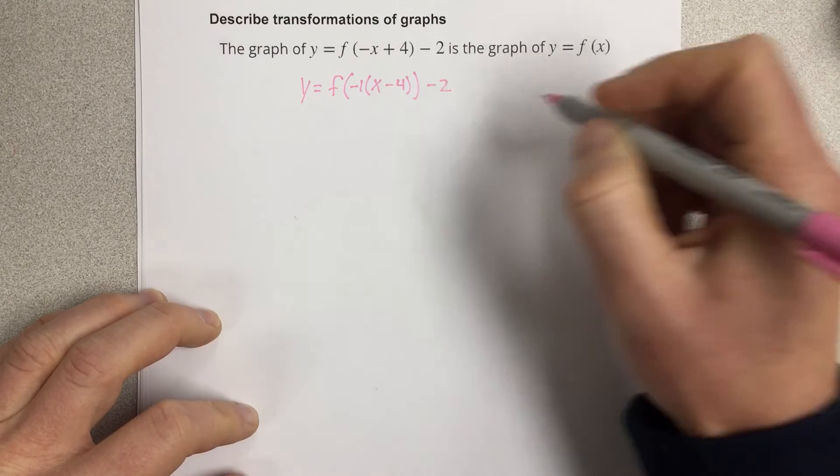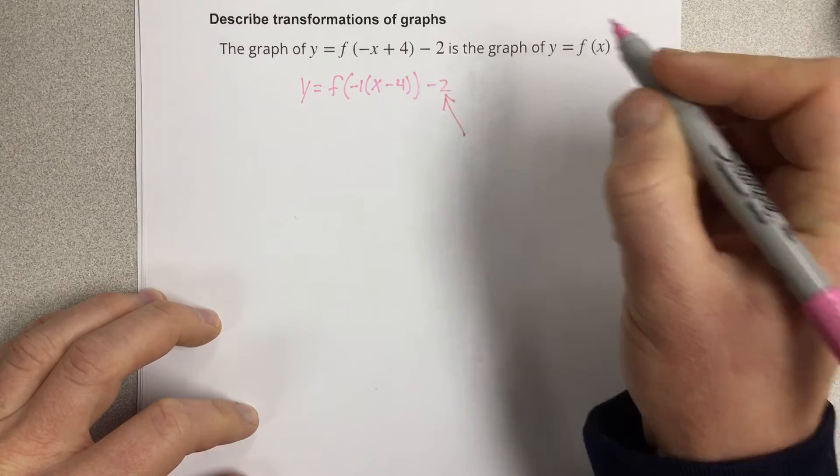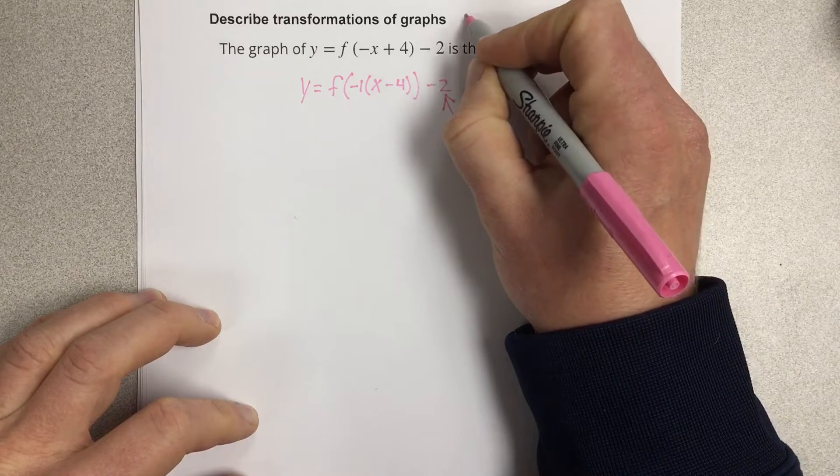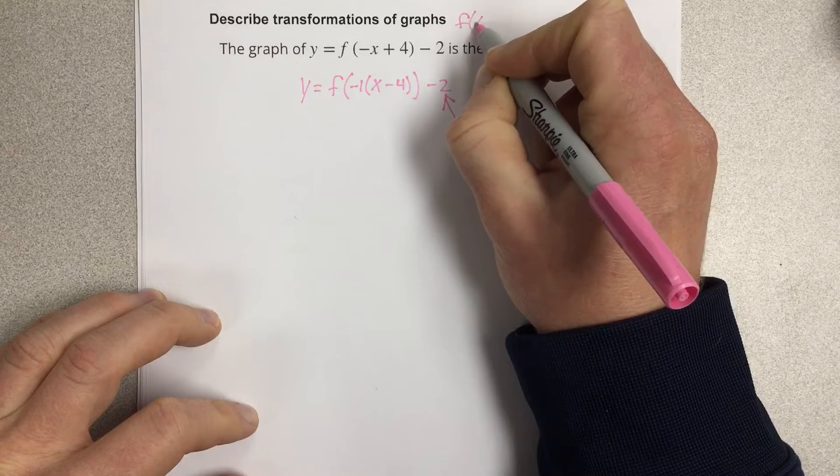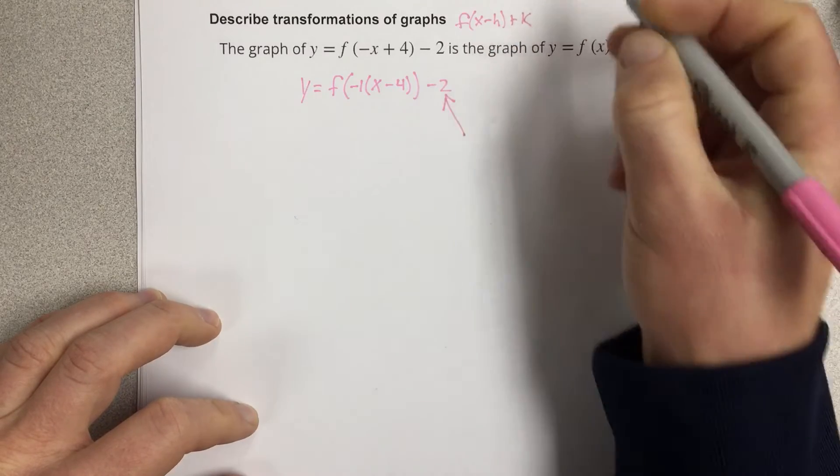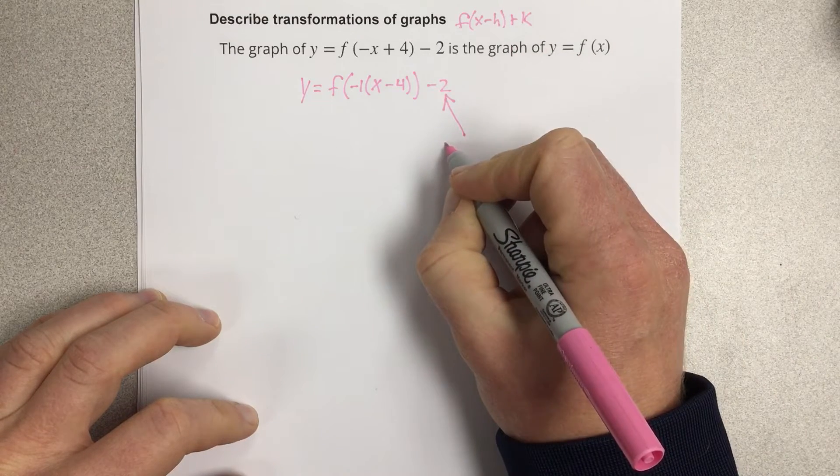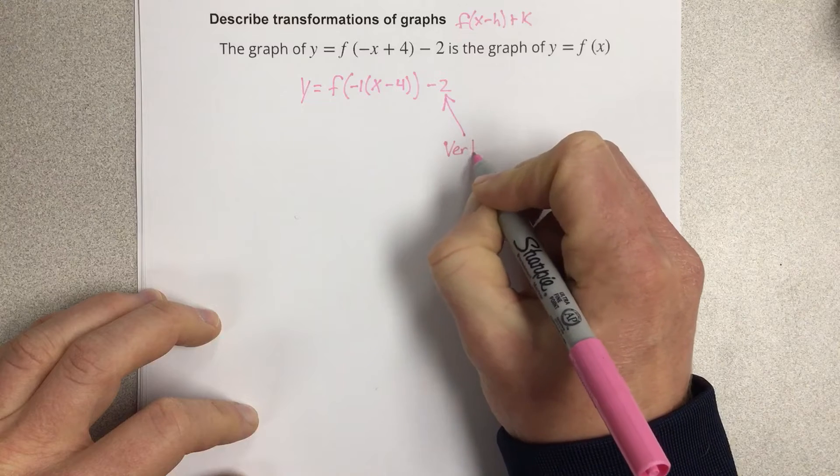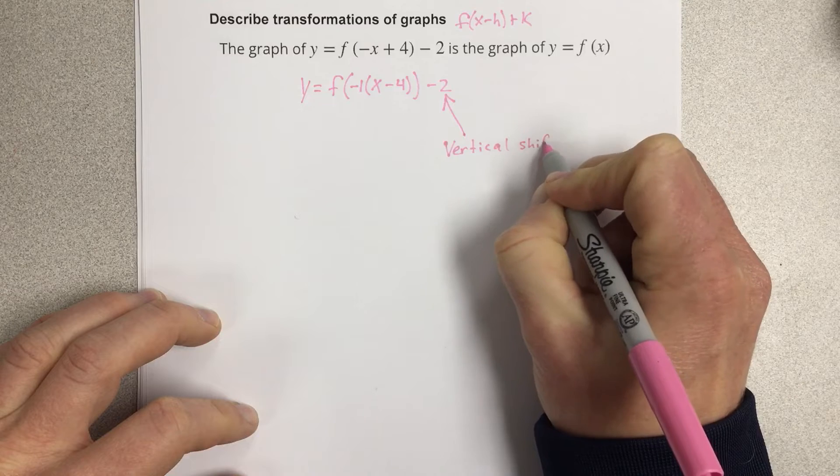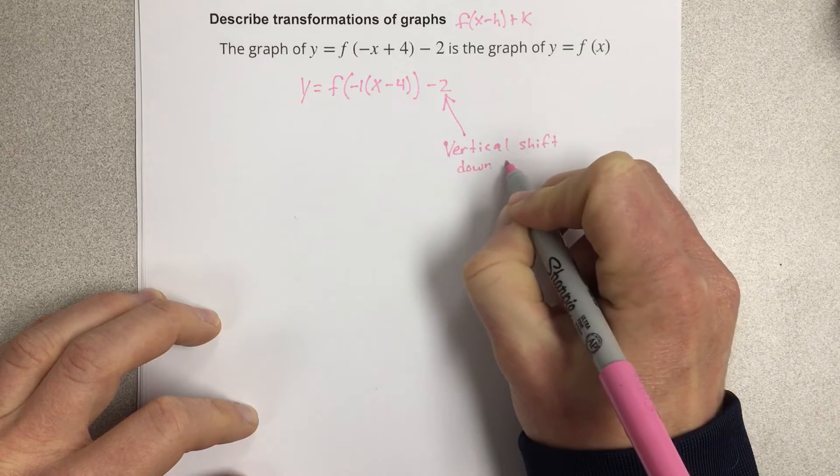So let's describe these things. Negative 2 on the outside. Remember that your general function for problems like these is f of (x minus h) plus k. So this is the k value. This is a vertical shift down 2 units.